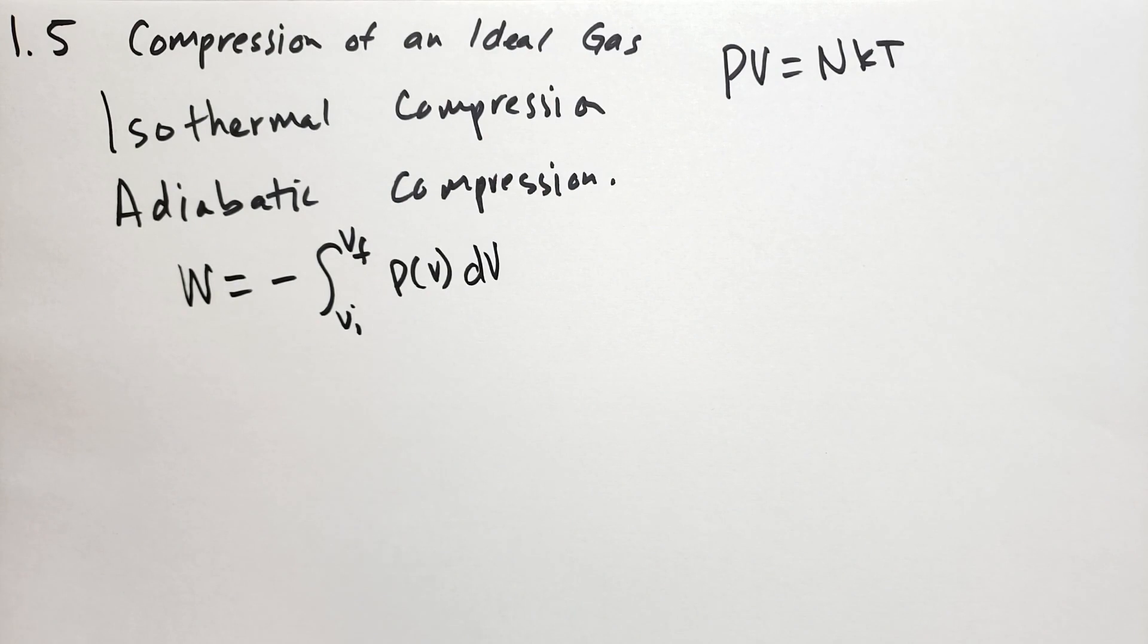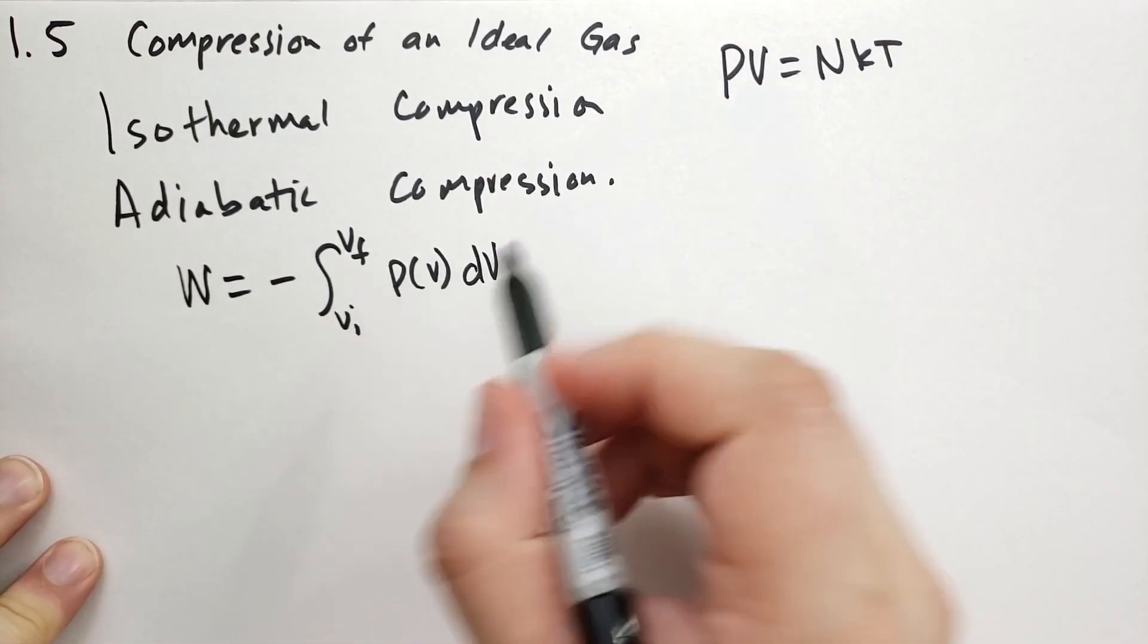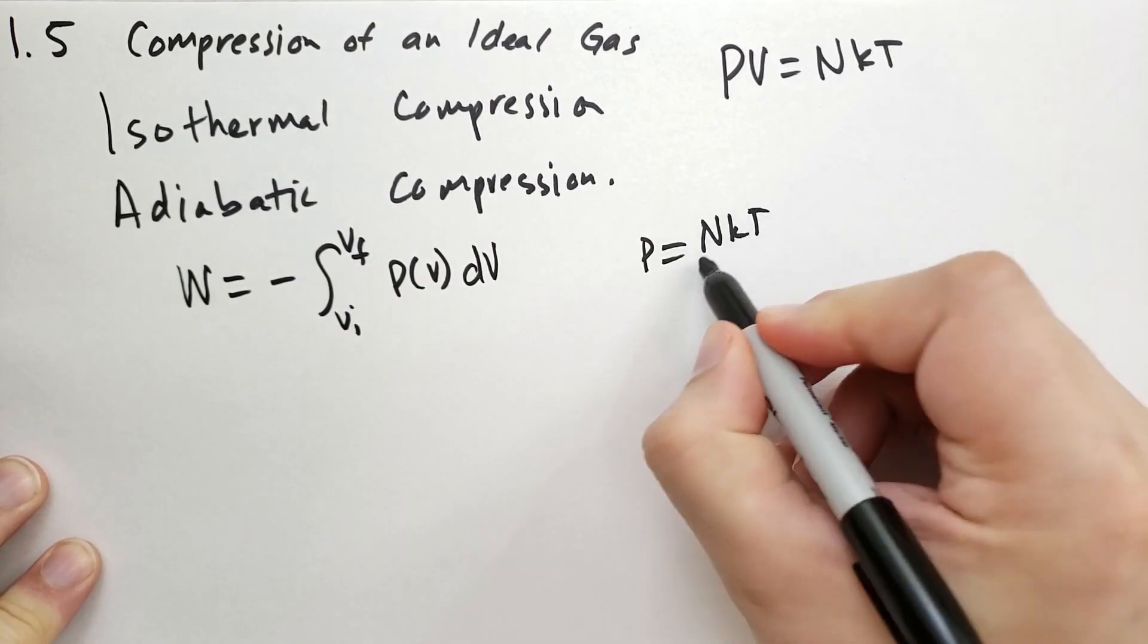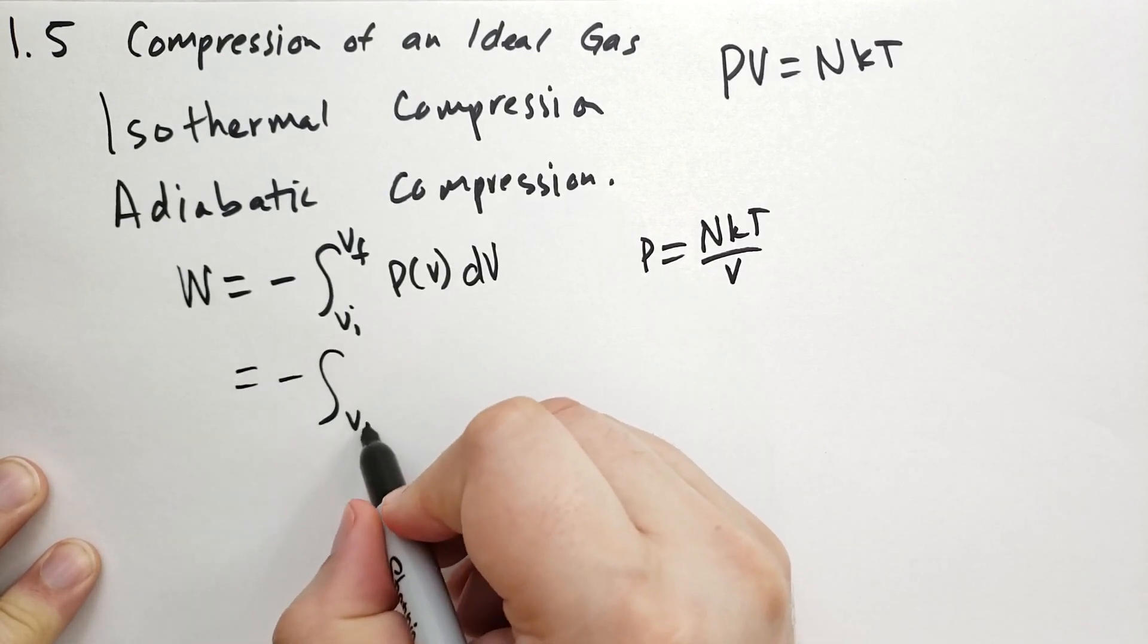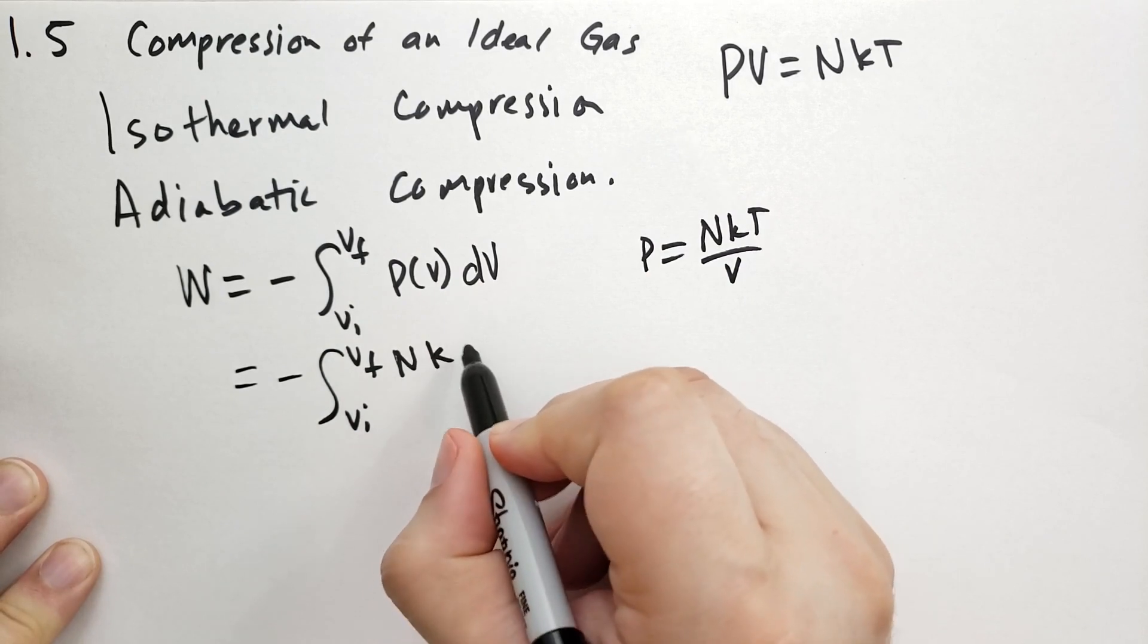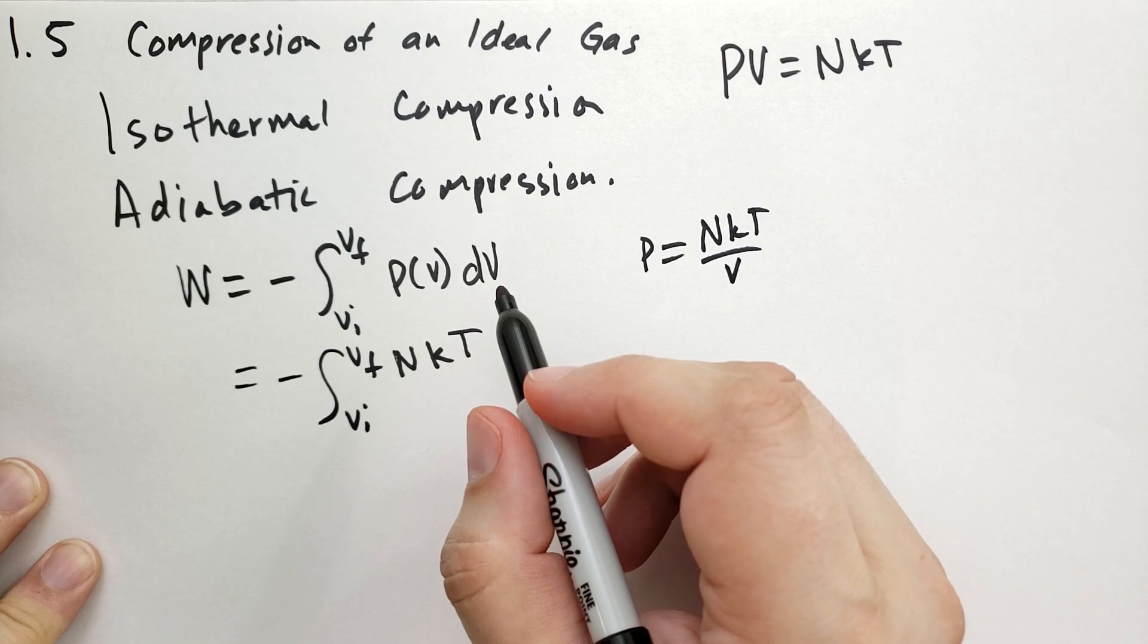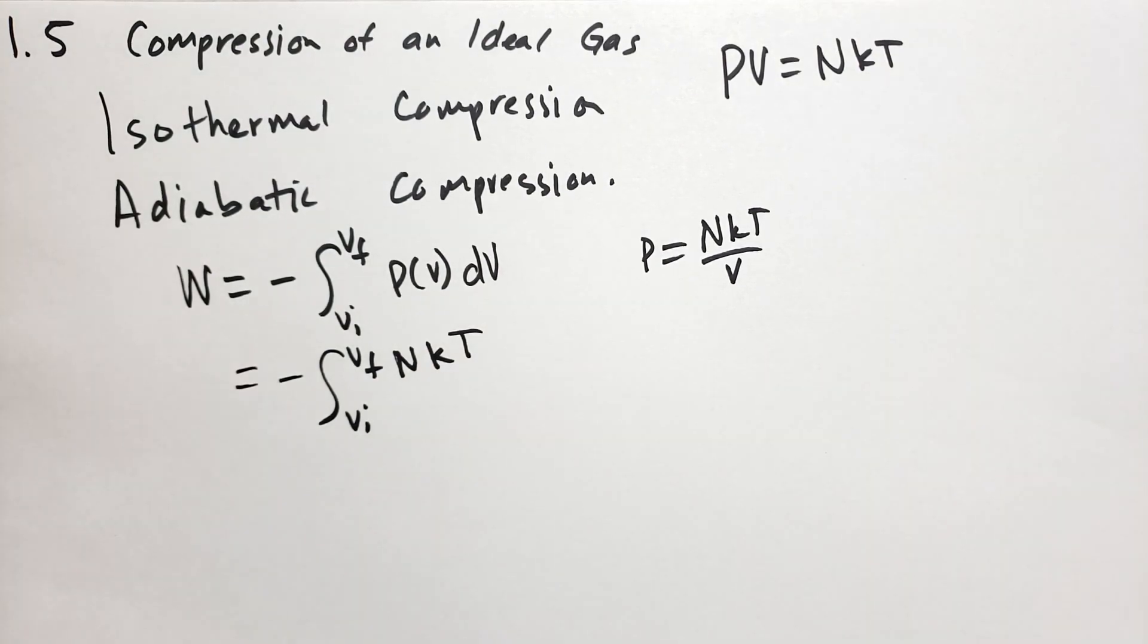So we need a formula for the pressure that varies according to V, and that's pretty easy to write. So we write P is equal to NKT over V. And so that gives us the integral from Vi to Vf of the number of particles times Boltzmann's constant.